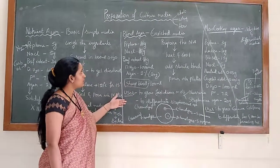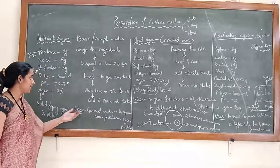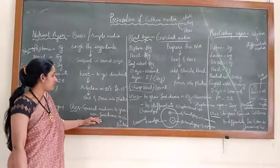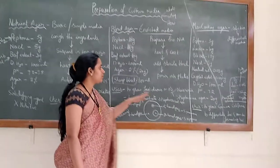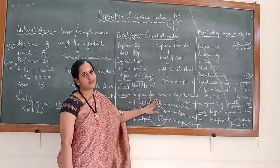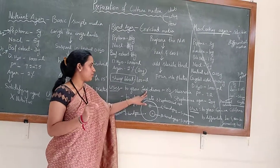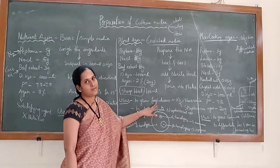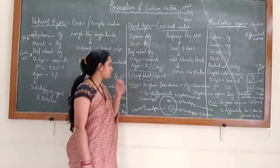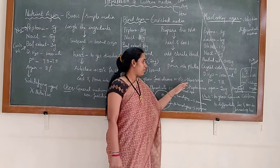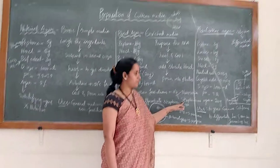Blood agar is used to grow fastidious microorganisms — those which require a special component or nutrient to be included in the media. The special nutrient here is blood. This blood agar is used to grow pathogens and microorganisms like Neisseria and Streptococcus species.